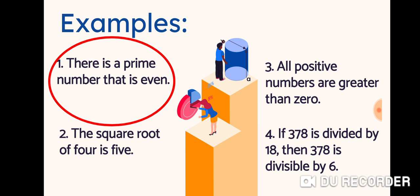But what about number two — the square root of four is five? We already defined a mathematical statement as a sentence which can be either true or false. So number two is a false statement because the square root of four should be two, not five.